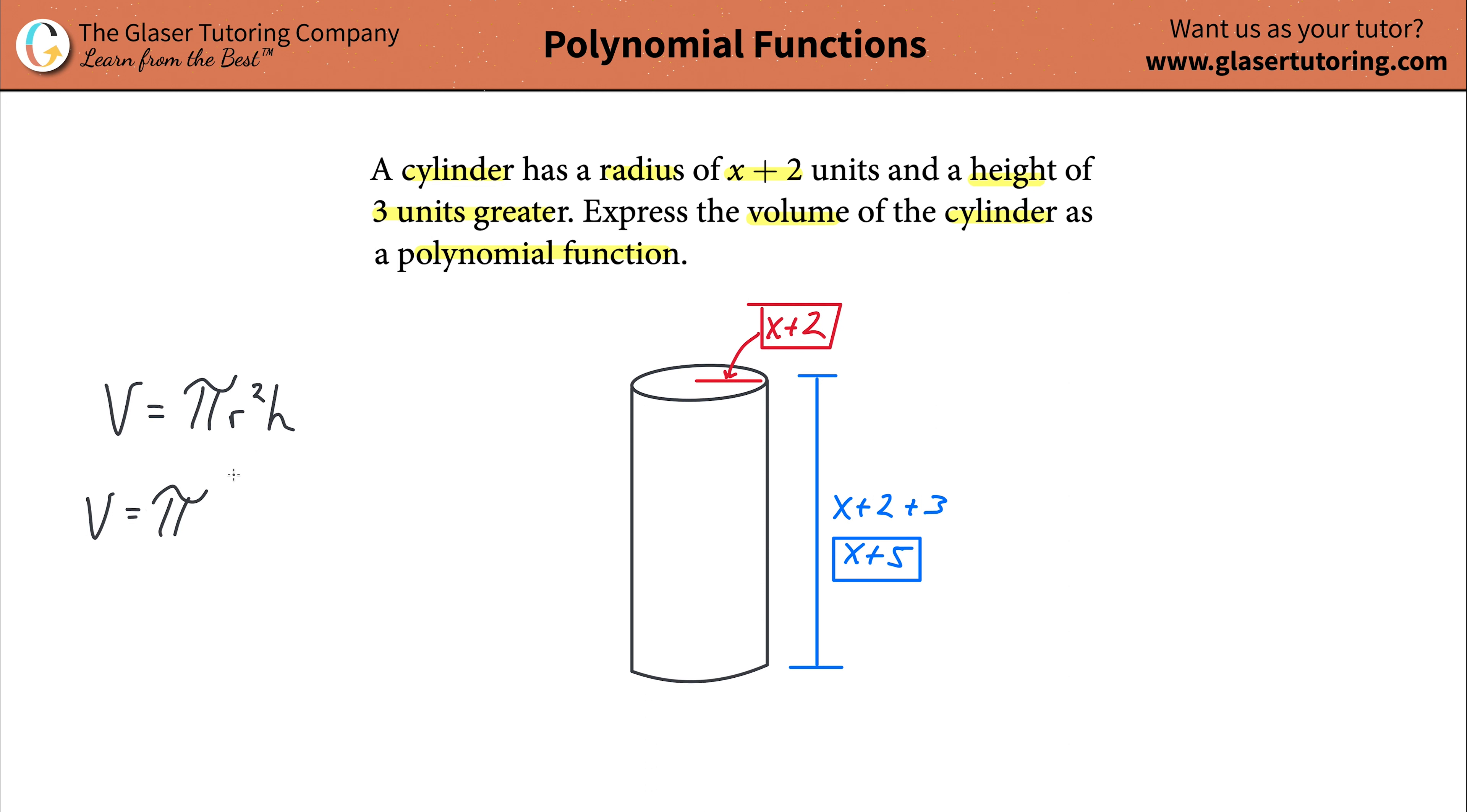What is the radius? It's x plus 2. Plug that in. x plus 2 squared. What's the height? It's x plus 5. And that's it, ladies and gentlemen. That's the function. That's it. This is a polynomial function now.